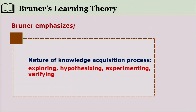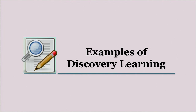Bruner emphasizes the nature of the knowledge acquisition process — we must put children through the same process through which knowledge is generated; otherwise we curb their curiosity and make the whole process an ordeal. This process moves from enactive to iconic to symbolic: exploring the environment, then hypothesizing as to its possibilities, then experimenting to verify the hypothesis, verifying to reach a conclusion, and representing that conclusion using symbols.